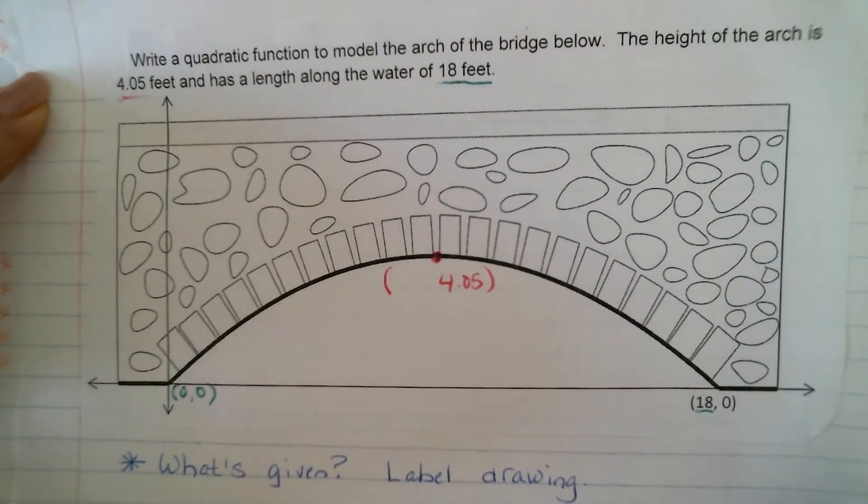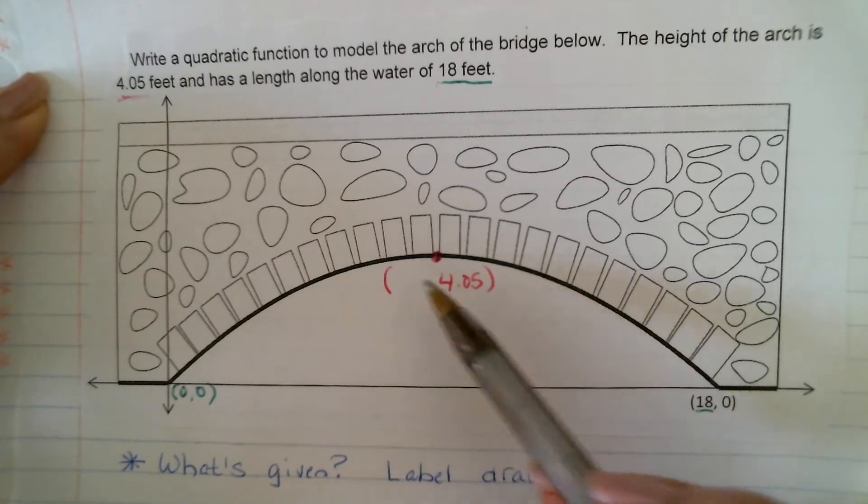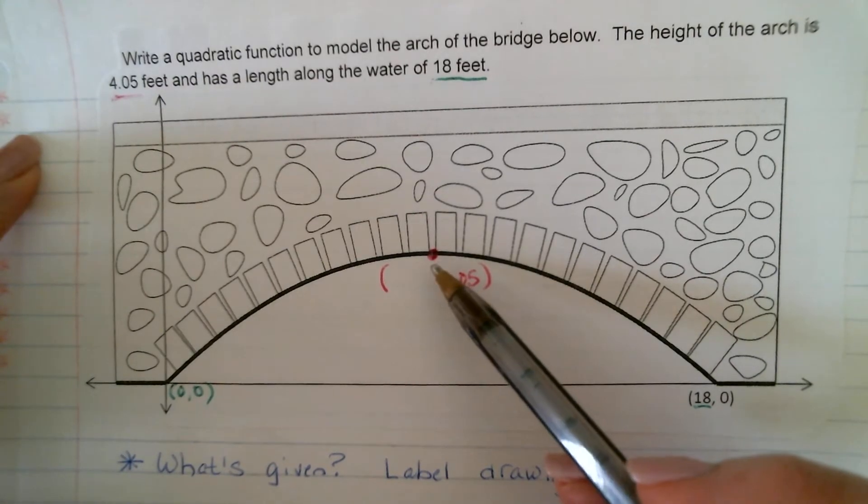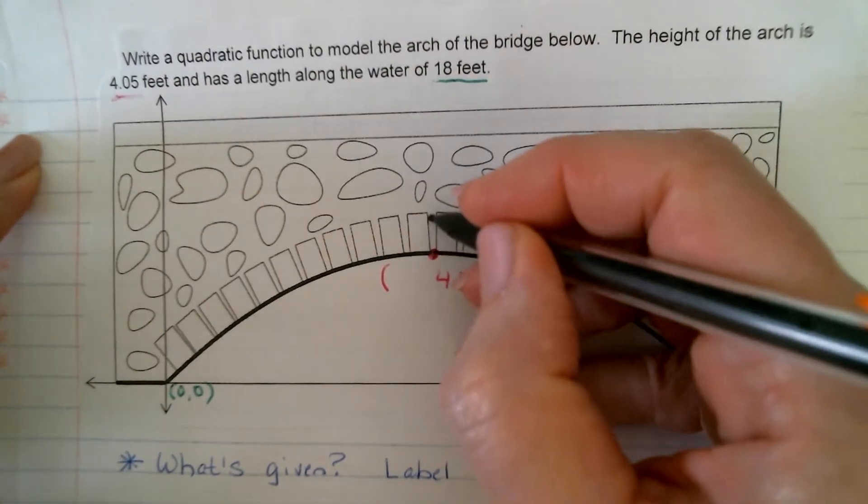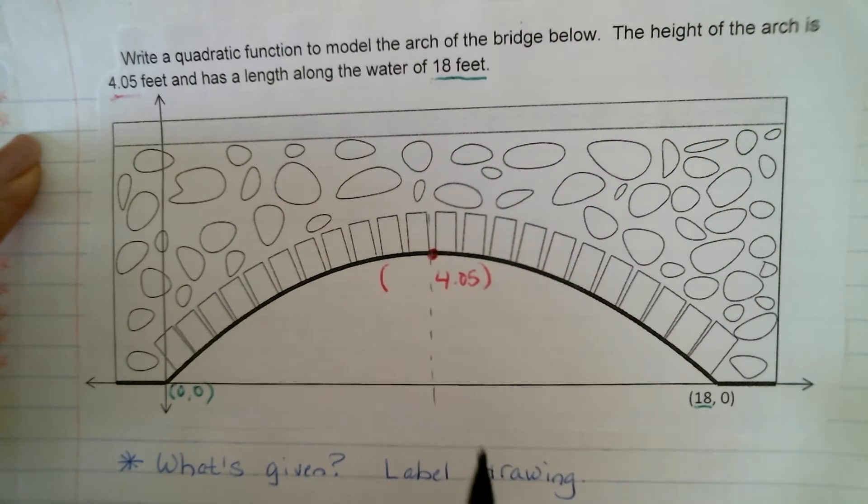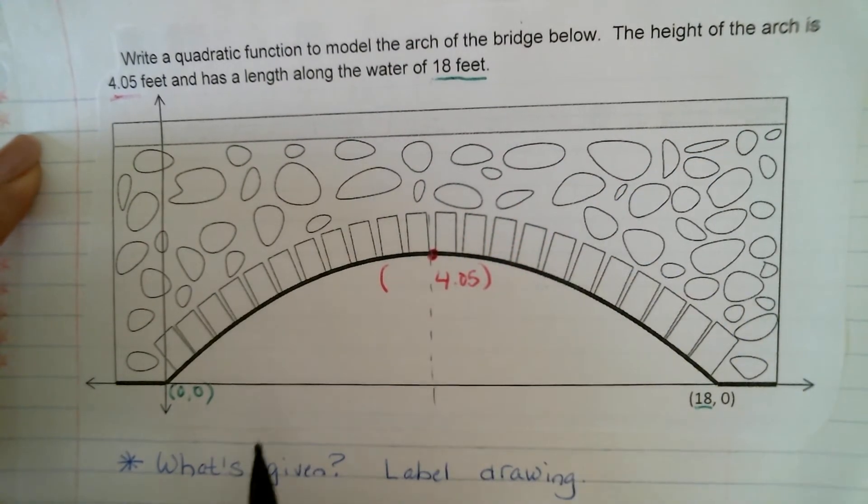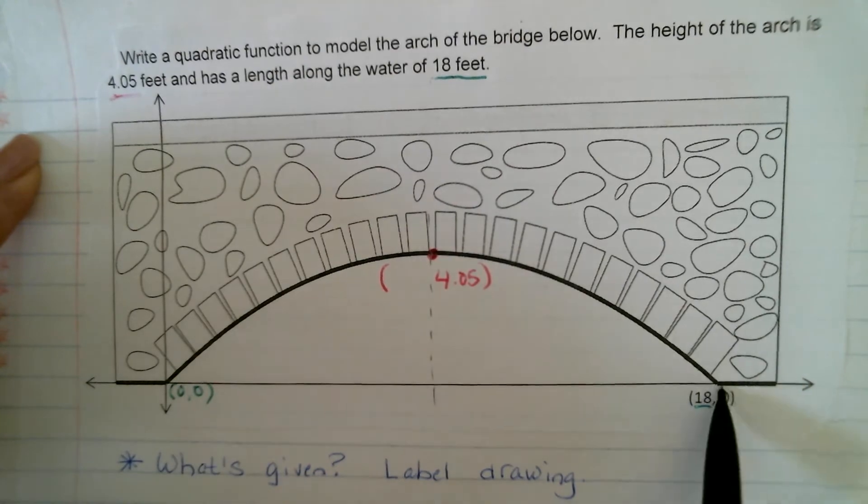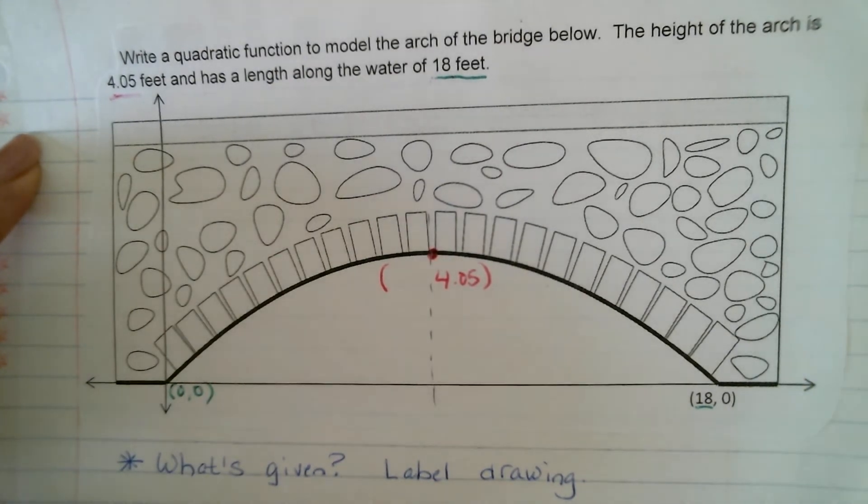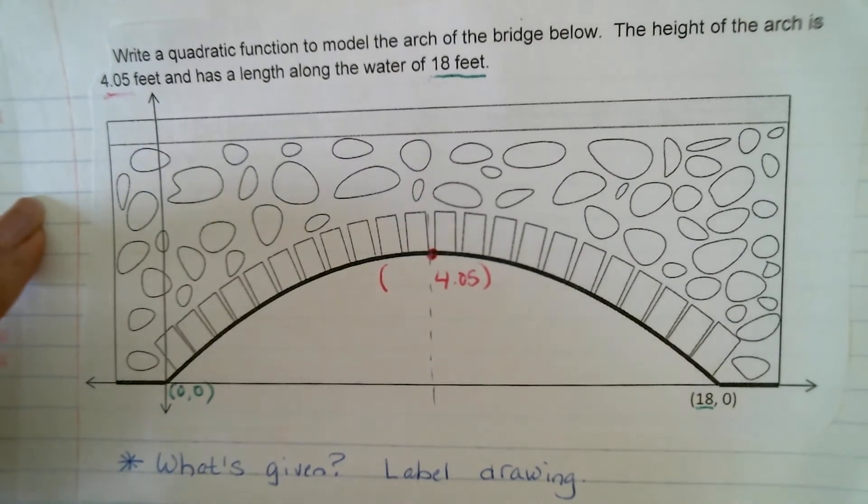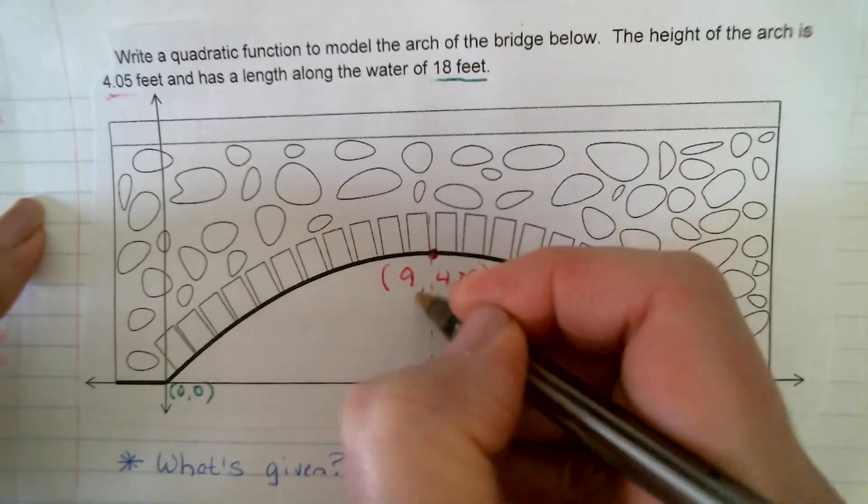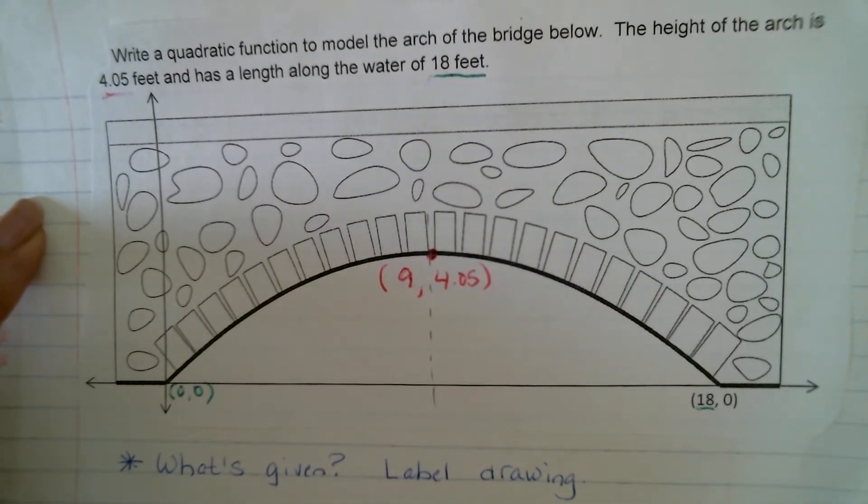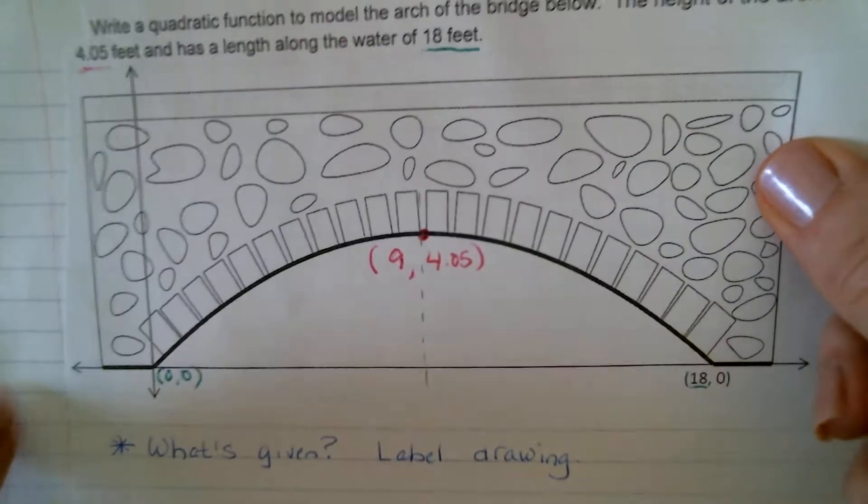So, could we figure out our x value here? I mean, if this is the maximum point, right? We have this axis of symmetry going through our graph, right? Where this divides this into two symmetrical halves, right? So, this has to be halfway between our x-intercepts, right? So, what would this be then? Well, half of 18 is 9, right? So, now I have these three coordinates that I can use to write my quadratic function.